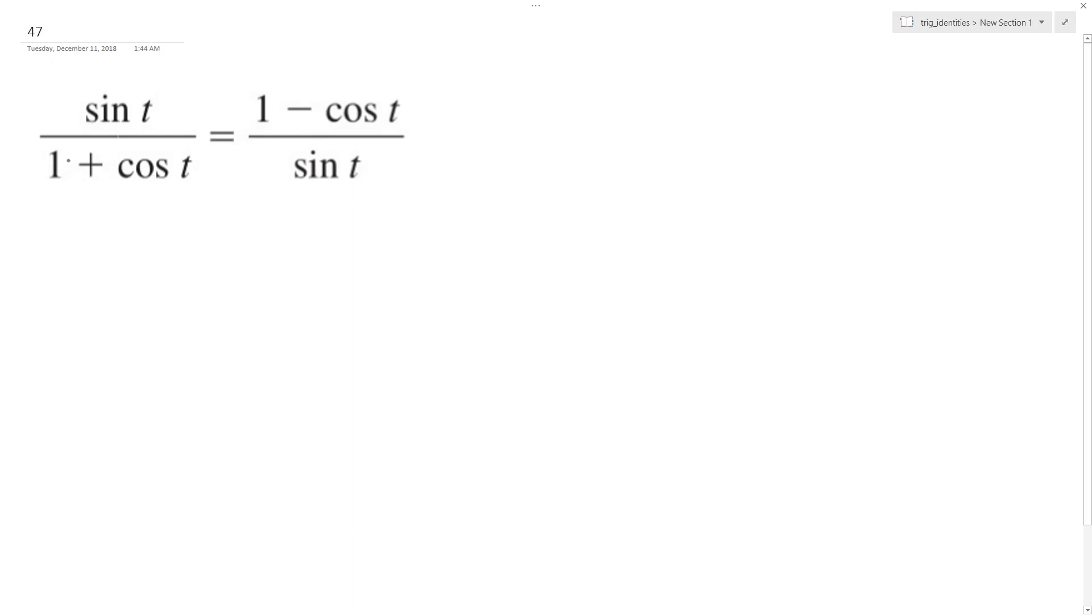what I'm going to do here is multiply the bottom and the top on the left by 1 minus cosine t and 1 plus cosine t, 1 minus cosine t.